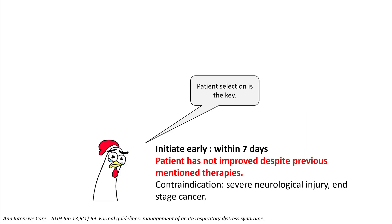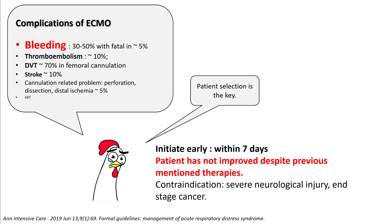Patient selection is the key in choosing VV ECMO. Make sure that you initiate it early — within seven days — and have used all the methods discussed to improve oxygenation. Contraindications include severe neurological injury and end-stage cancer. ECMO is not free of complications: it can result in bleeding in 30 to 50 percent of patients and can be fatal in 5 percent. Other complications include thromboembolism, DVT, strokes, and cannulation-related problems.